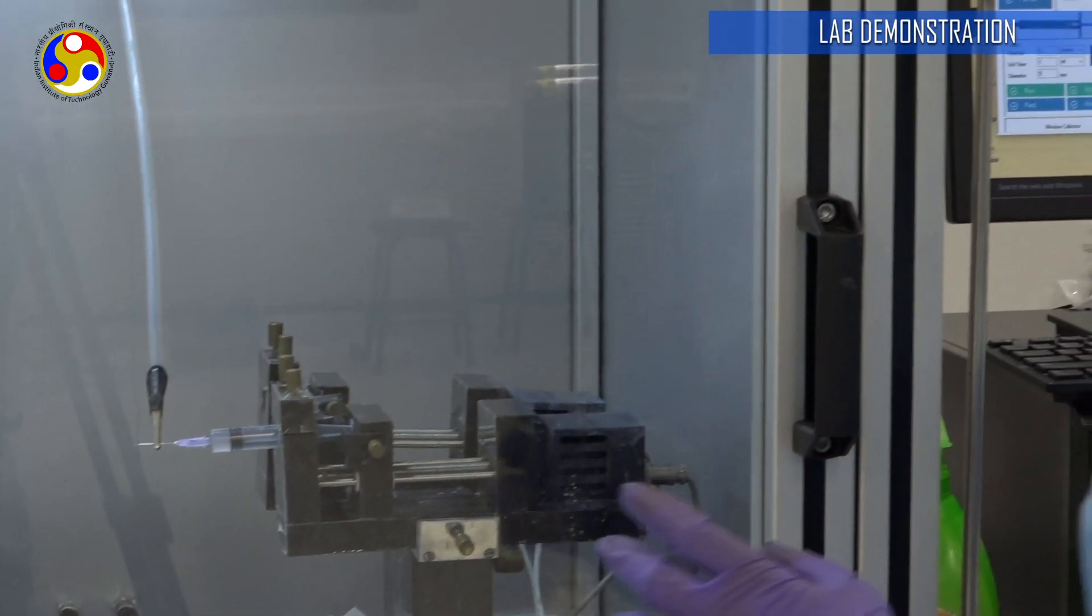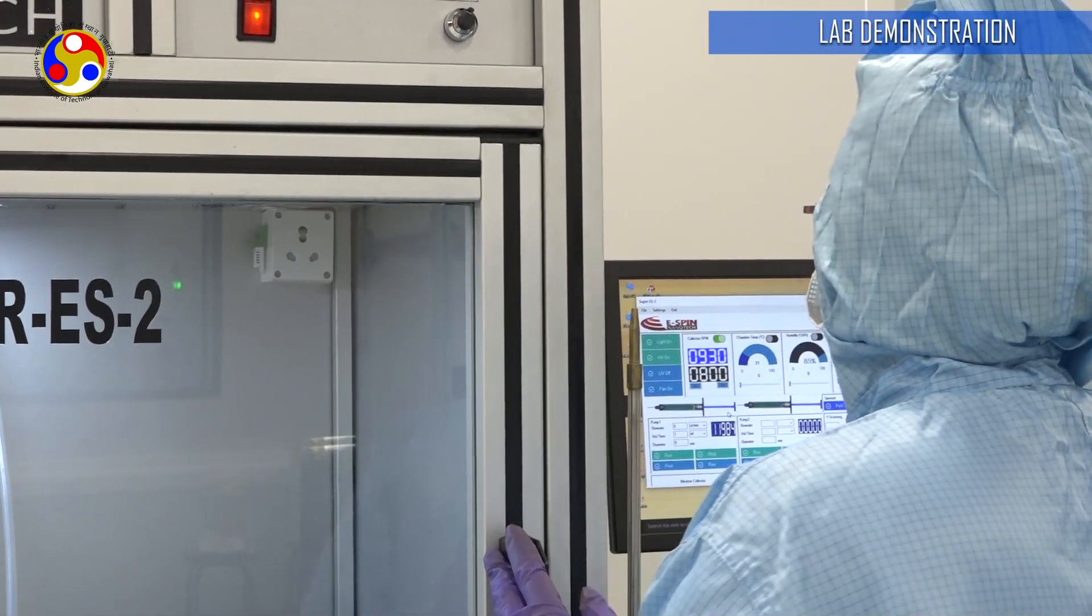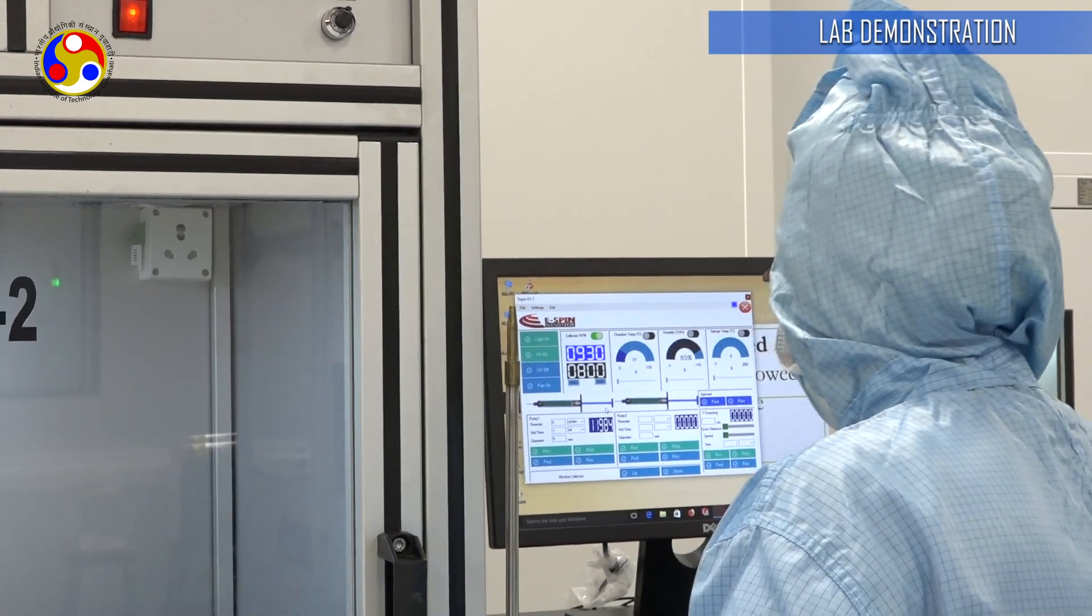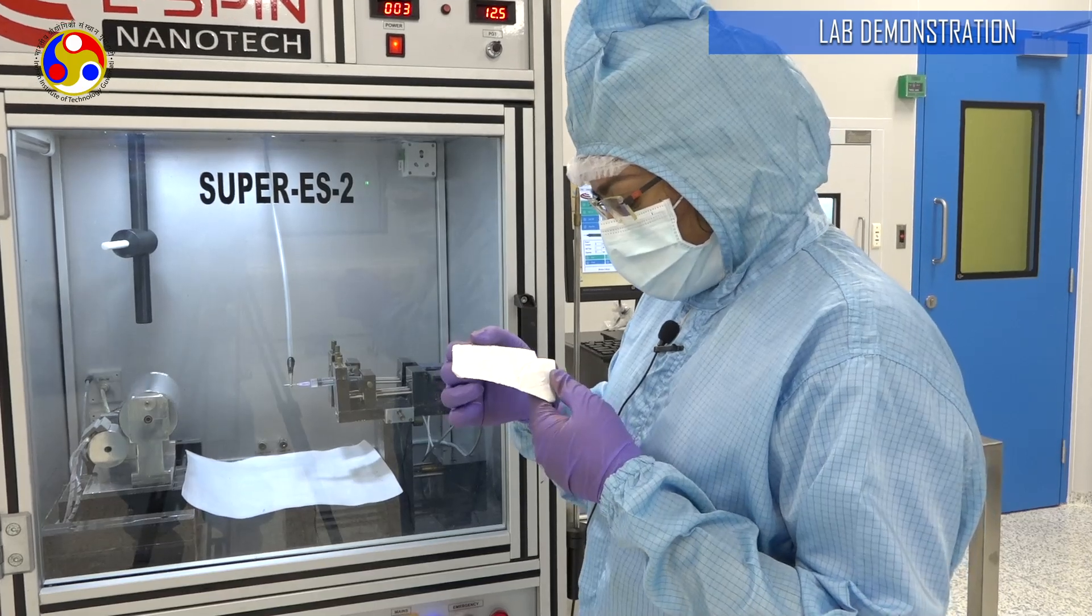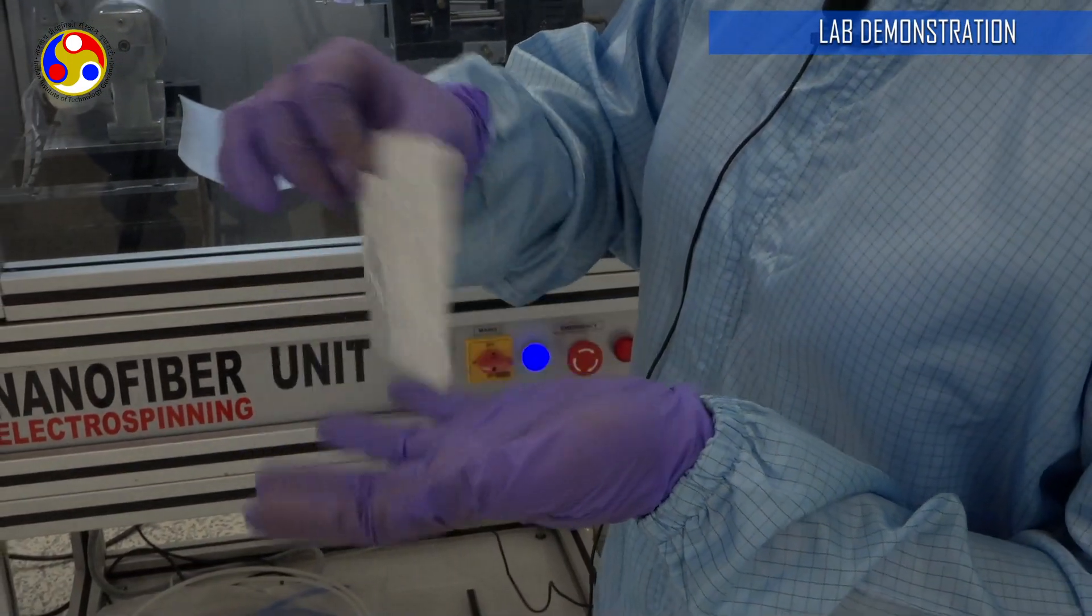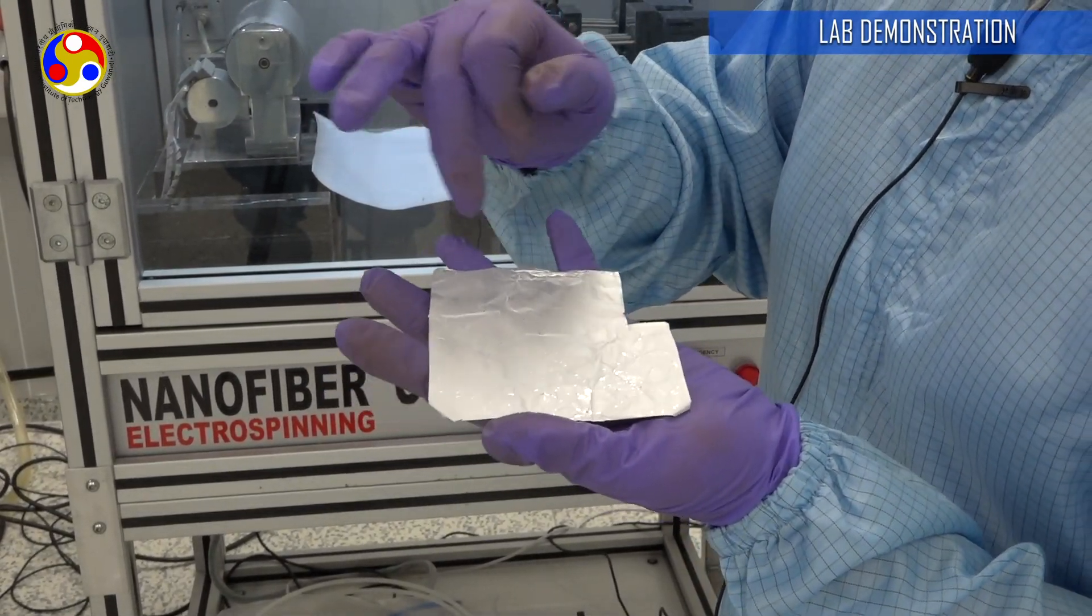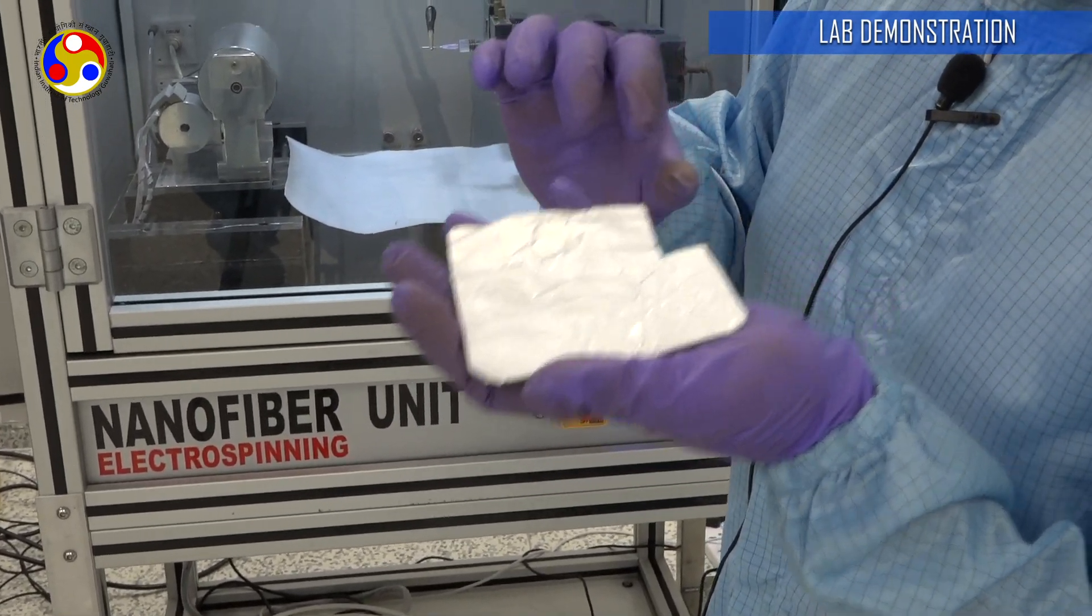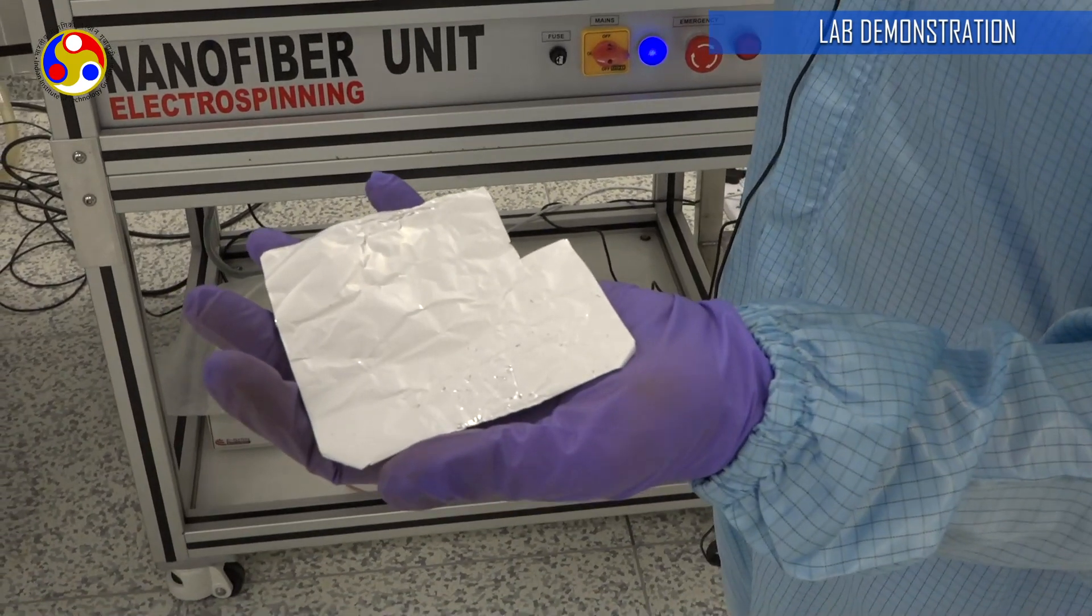Typically this process takes a very long time depending on the thickness of the deposition, but I have some samples here, I will show them to you. This is an old sample that I have electrospun. As you can see, this is an aluminum foil and the whitish layer on this substrate is the deposited fibers. If you can see, take a better look.